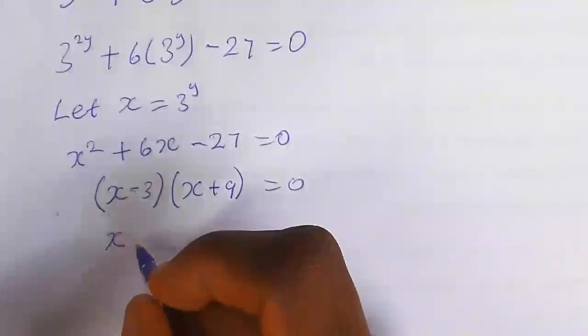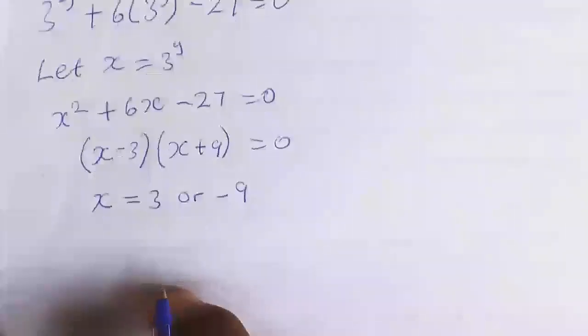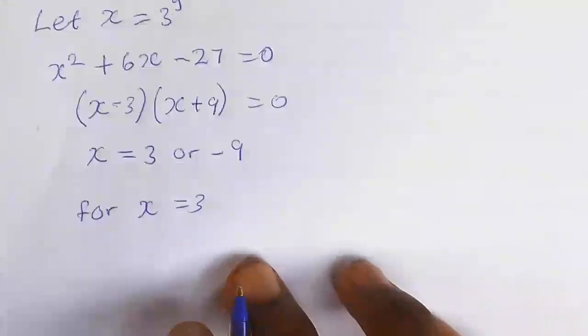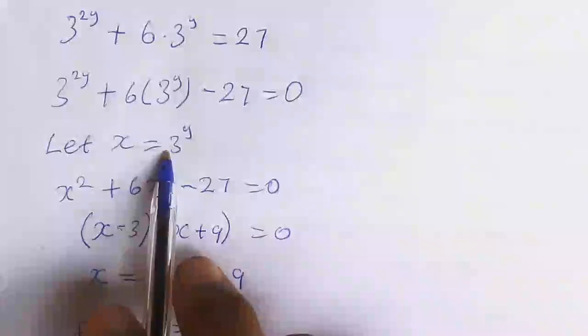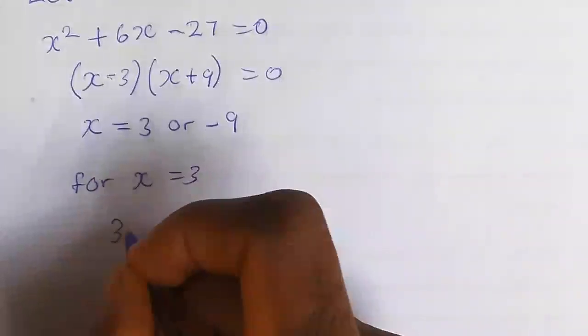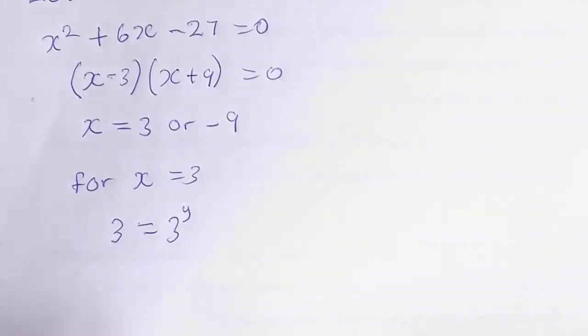In this case, our x is equal to 3 or minus 9. For x equal to 3, since our x equal to 3 to the power of y, then 3 will be equal to 3 to the power of y. I hope you understand.